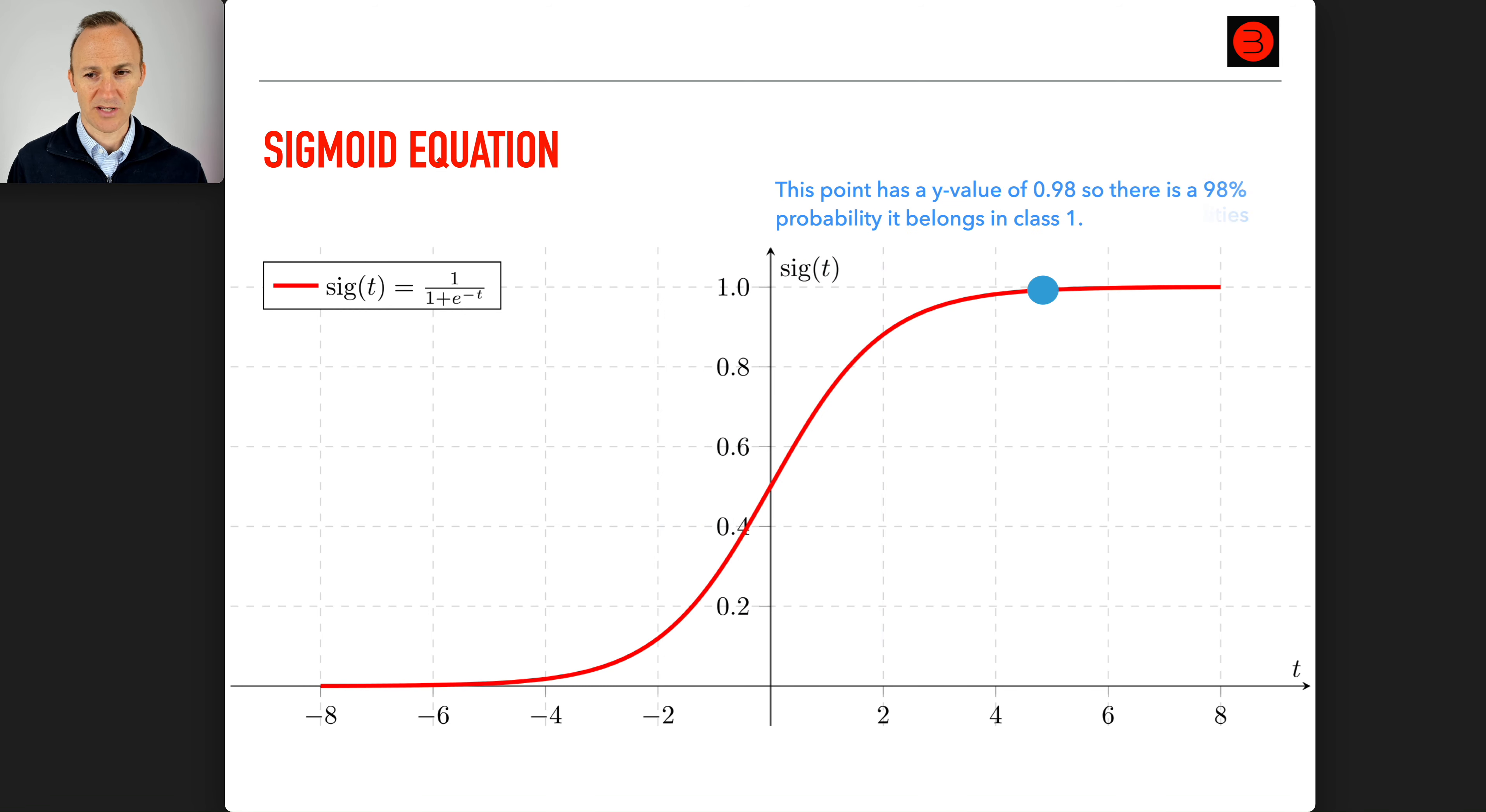This point is a y value of 0.98, so there's a 98% probability it belongs to class one. This point is a y value of 0.2, so there is a 20% probability it belongs to class one and an 80% probability it belongs to class zero.